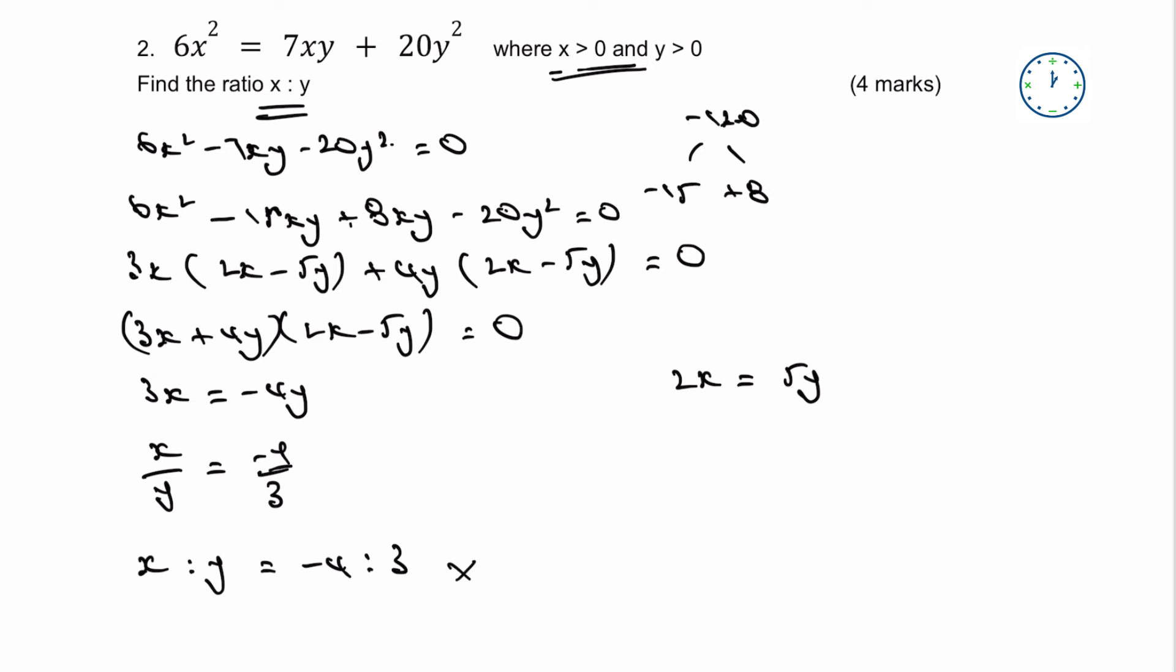But if I look at my second one, I can write that again as x/y equals 5/2. Therefore, my ratio is going to be x:y is going to be equal to 5:2. And that would be the answer to this particular question.